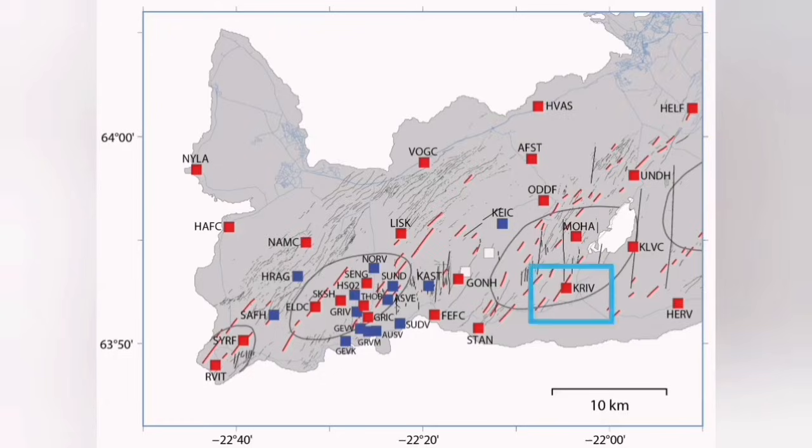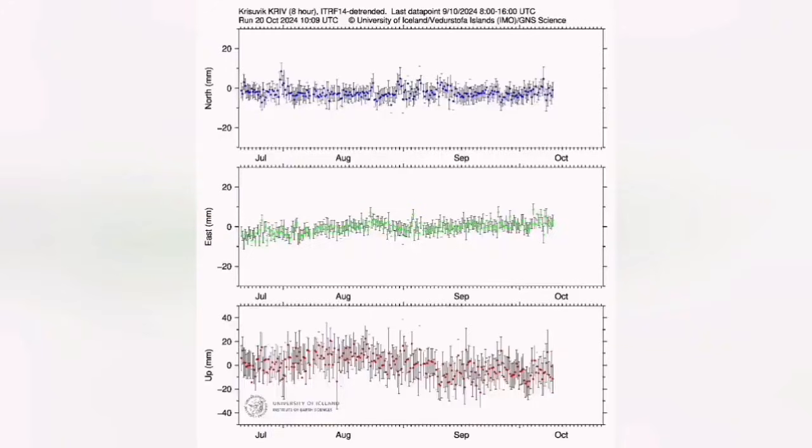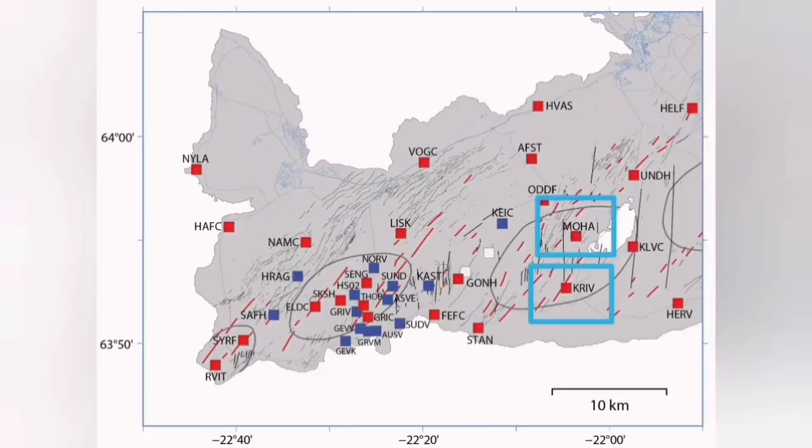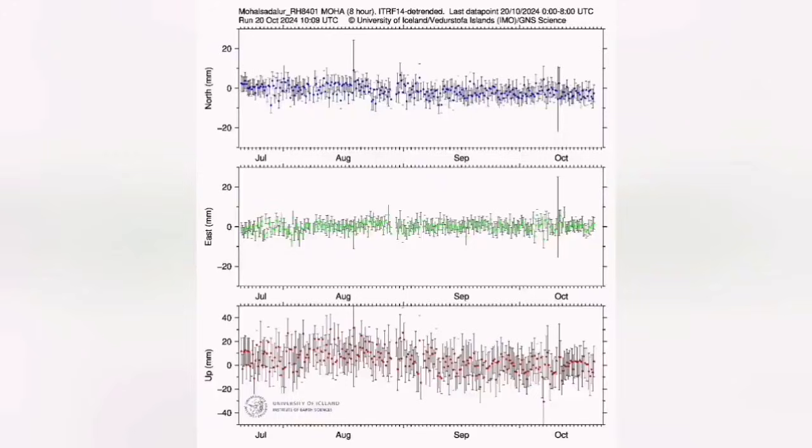We know they are not related to the magma movement because when we look at the GPS data for this area, this is Krýsuvík data. You cannot see any change in the GPS data due to the accumulation or rising of the ground due to the accumulation of magma. Adjacent stations also don't show anything like that.